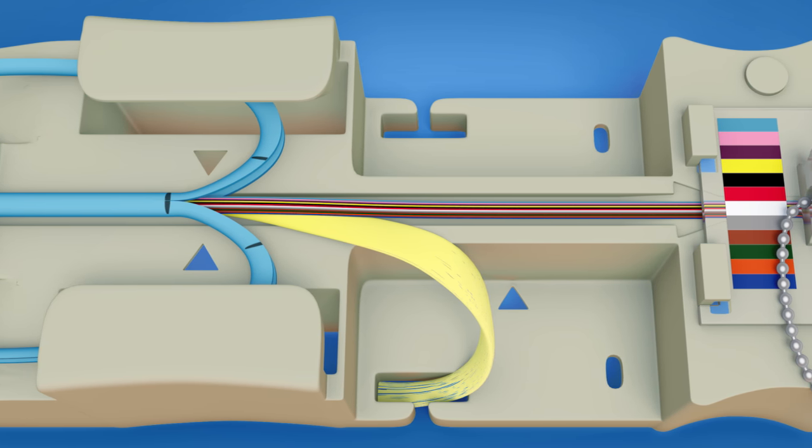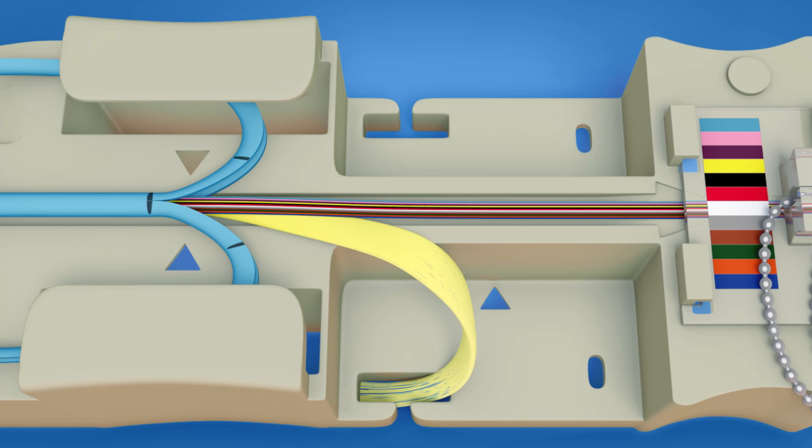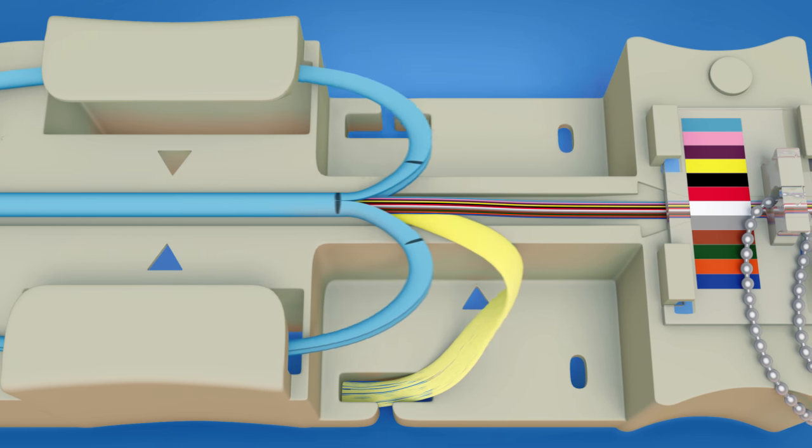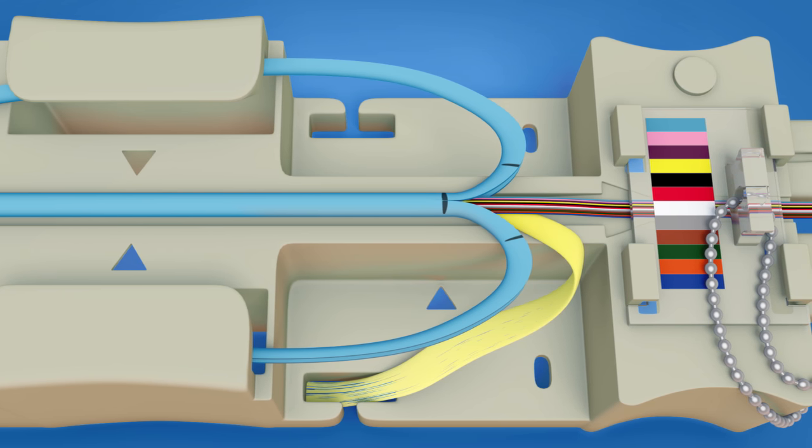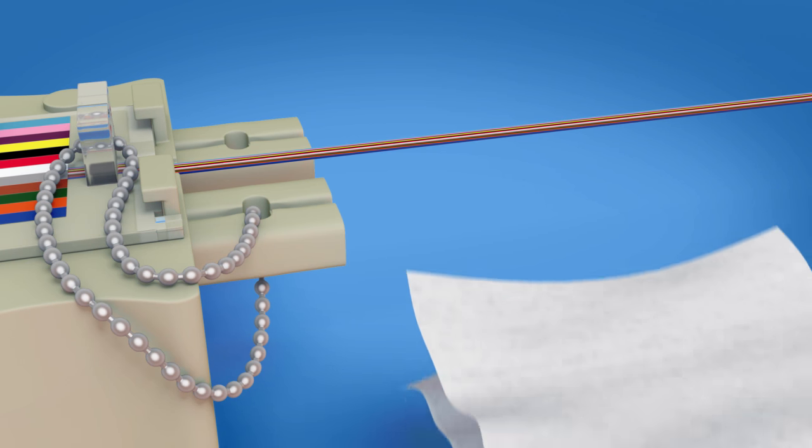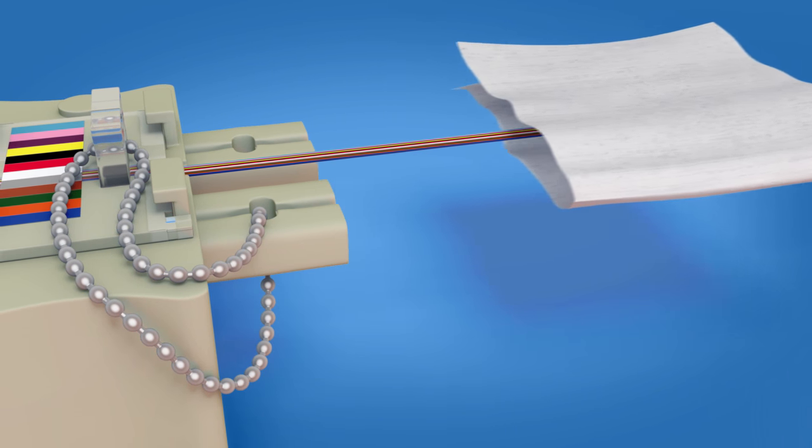Insert the fibers through the slit in the order indicated on the cover. Push the cord forward until the slit jacket mark is at the second set of arrows. Clean the fibers with a lint-free cloth and fiber preparation fluid.